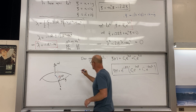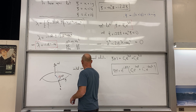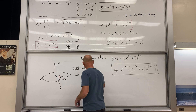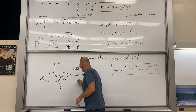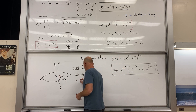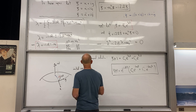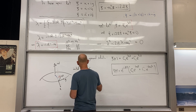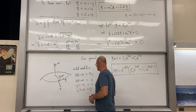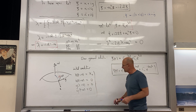Now for initial conditions: x(0) equals x-zero, x-dot(0) equals zero, y(0) equals zero, y-dot(0) equals zero. We're pulling the pendulum out to x-zero and releasing it from rest.